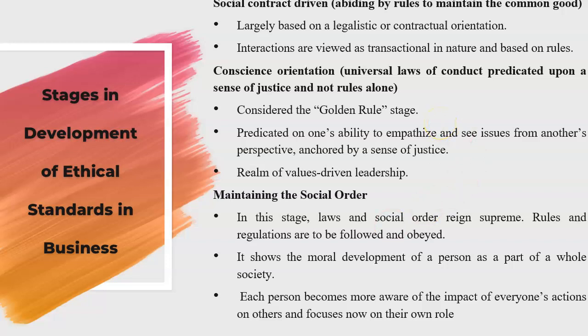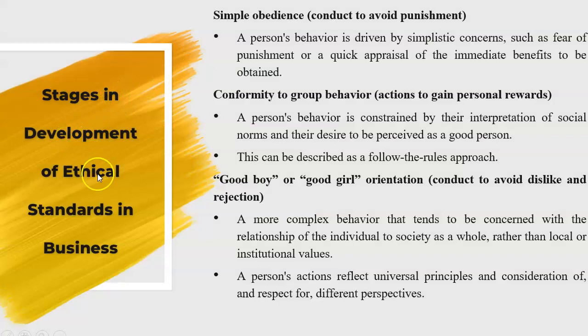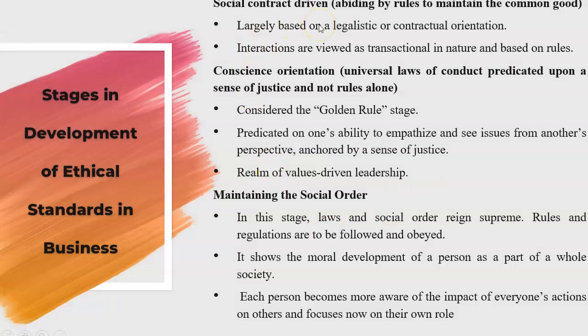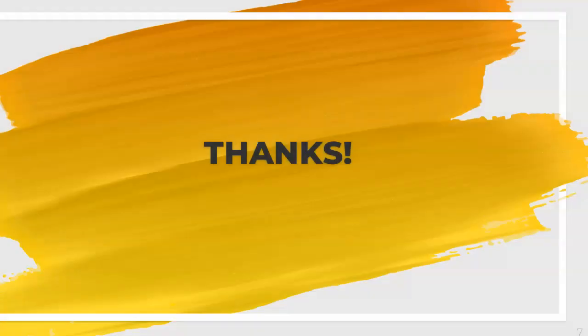To summarize, we've covered the stages in the development of ethical standards in business: simple obedience, conformity to group behavior, good boy or good girl orientation, social contract driven abiding by rules to maintain common ground, conscience orientation predicated on a sense of justice and not rules alone, and finally maintaining the social order. I hope these points are clear and that all the lectures were helpful. I'll be back with a new lecture — please share your feedback. Thank you very much, have a wonderful day.